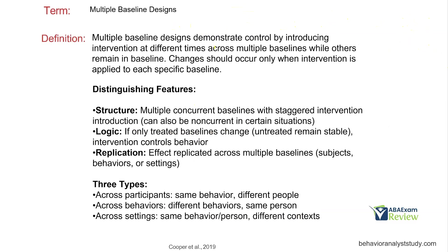Multiple baseline designs demonstrate control by introducing intervention at different times across multiple baselines while others remain in baseline. Changes should occur only when intervention is applied to each specific baseline. We have our baselines — we might intervene in the first one and see changes, while baseline continues in the others. Then we intervene in the second and see change, and then the third. Baseline continues until intervention begins, and we should only see change when intervention is applied to the unique baseline, not earlier in the sequence.